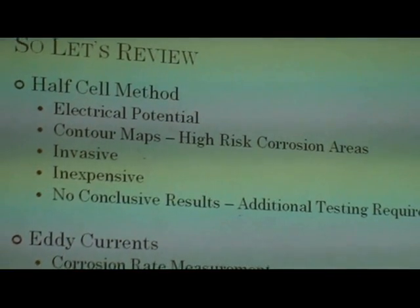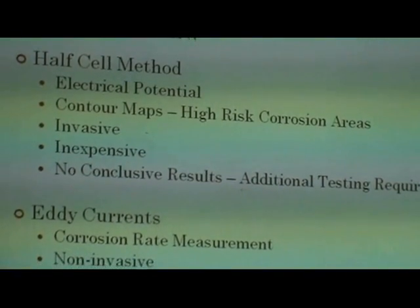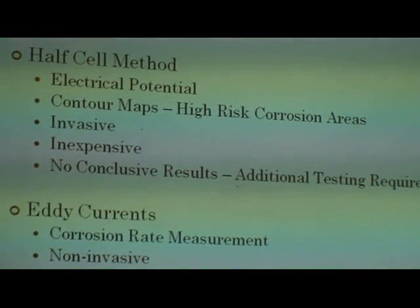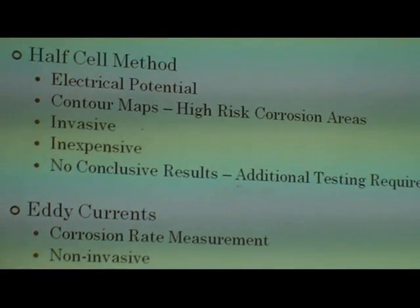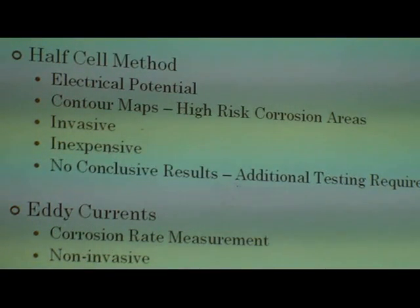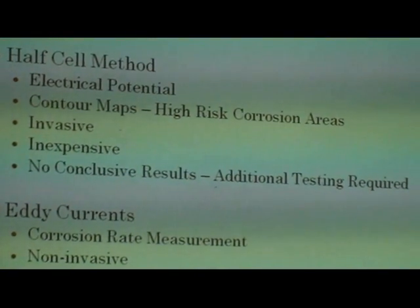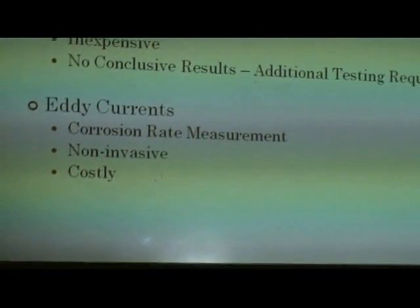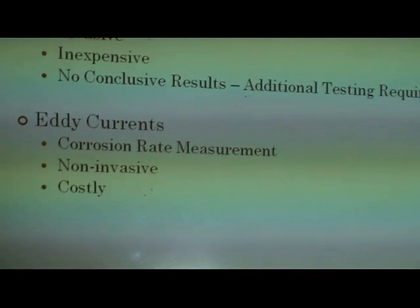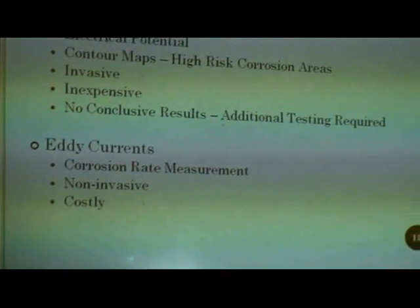Reviewing the two methods covered: the half-cell method uses electrical potential to determine whether corrosion is occurring, generates contour maps to assess higher-risk areas, is invasive but inexpensive, and does not yield conclusive results — additional testing is required. Eddy currents actually measure the corrosion rate; it's non-invasive but costly. So we have two methods utilizing two different electrical concepts.